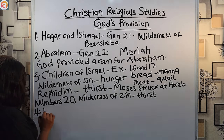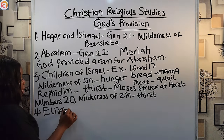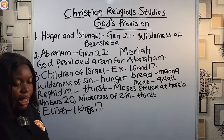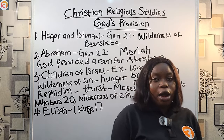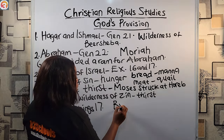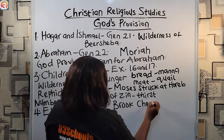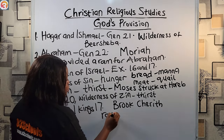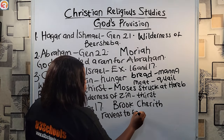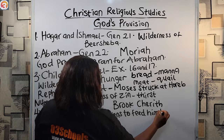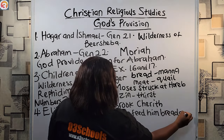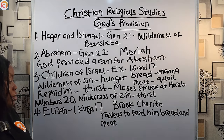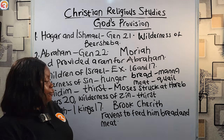We also see the case of Elijah, recorded in 1 Kings chapter 17. Elijah stopped rain, and God asked him to go to Brook Cherith. While Elijah was there, God provided for him by sending ravens to feed him meat and bread morning and evening. He got his water from the brook.